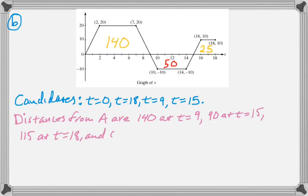And then at 0, the distance is 0. And so, the maximum distance is 140 at t equals 9.